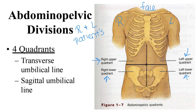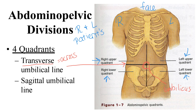We form these quadrants by making a transverse umbilical line — transverse means across, dividing things into top and bottom — going right through the umbilicus, also known as your belly button. Then we have a sagittal umbilical line, which is a vertical line that also goes through the belly button and divides things into right and left. It's quick and easy for the doctor and easy for the patient to understand.